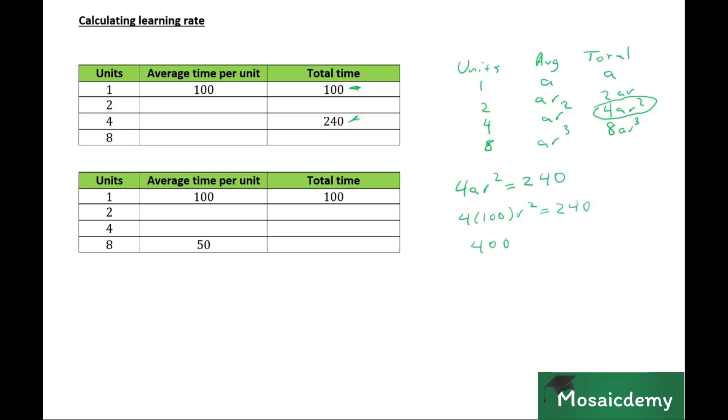So basically four into 100 R squared is equal to 240. 400 R squared is equal to 240. So R squared is equal to 240 over 400, which is equal to 0.6.